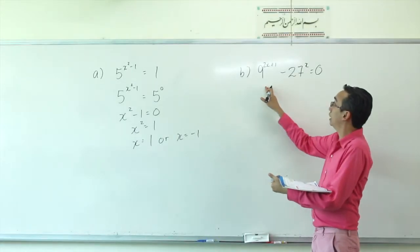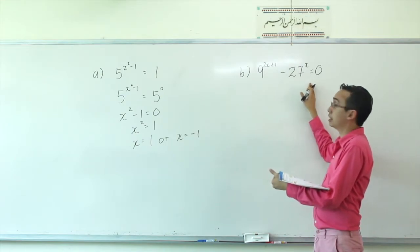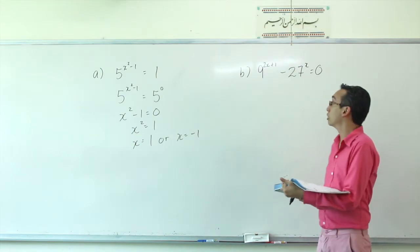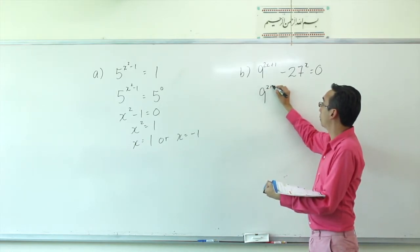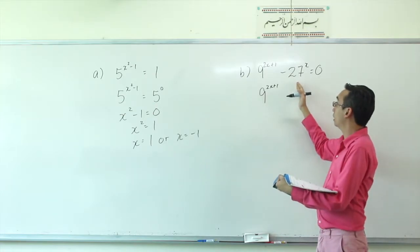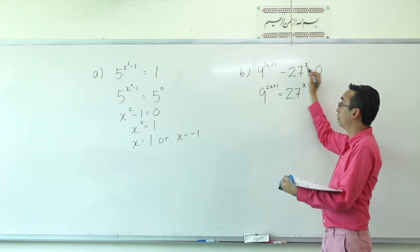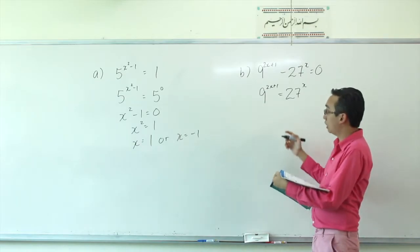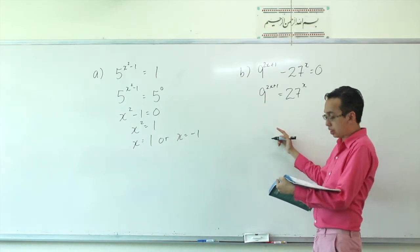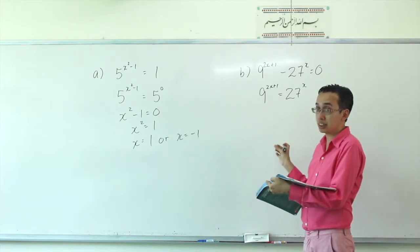Let's try something slightly different. This one is 9 to the power of 2X plus 1, minus 27 to the power of X, equals 0. What we do is take 9 to the power of 2X plus 1 and leave it on the left, then bring 27 to the power of X over to the other side. One base is 9 and the other is 27, so we try to make them the same base — the common base.